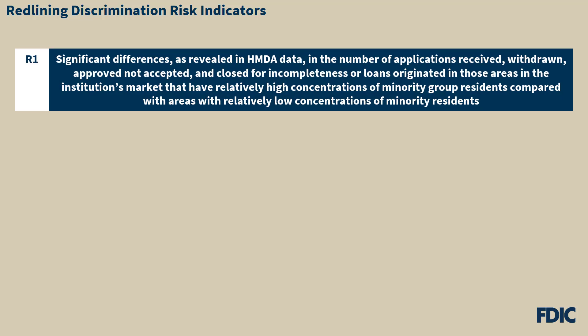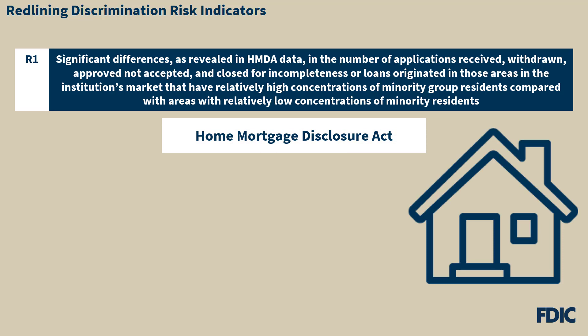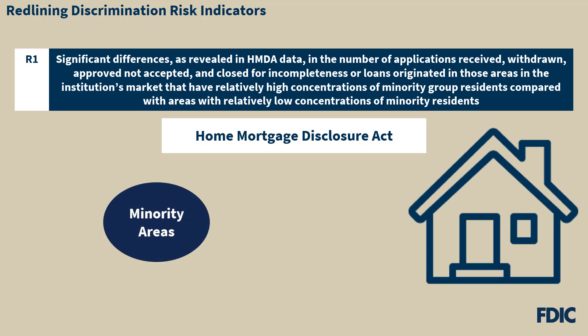Let's start with our first risk indicator, R01. This indicator references significant differences, as revealed in HMDA data, in the number of applications received, withdrawn, approved, not accepted, and closed for incompleteness, or loans originated in areas in the institution's market that have relatively high concentrations of minority group residents, compared with areas with relatively low concentrations of minority residents. HMDA data provides the bank with a record of whether the bank's activity in any minority area appears to be excluded or otherwise treated less favorably as compared to other areas in the REMA. For example, a lack of or a minimal level of lending within a minority area could indicate that the bank is avoiding doing business in that area.